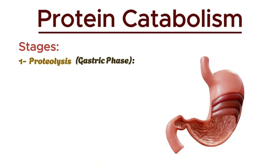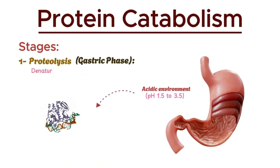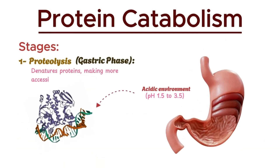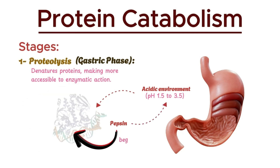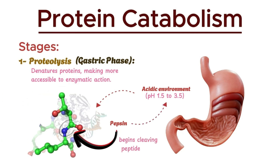In the stomach, the acidic environment denatures proteins, making them more accessible to enzymatic action. Enzyme pepsin, secreted as an inactive zymogen called pepsinogen, is activated by the acidic pH and begins cleaving peptide bonds within the protein.